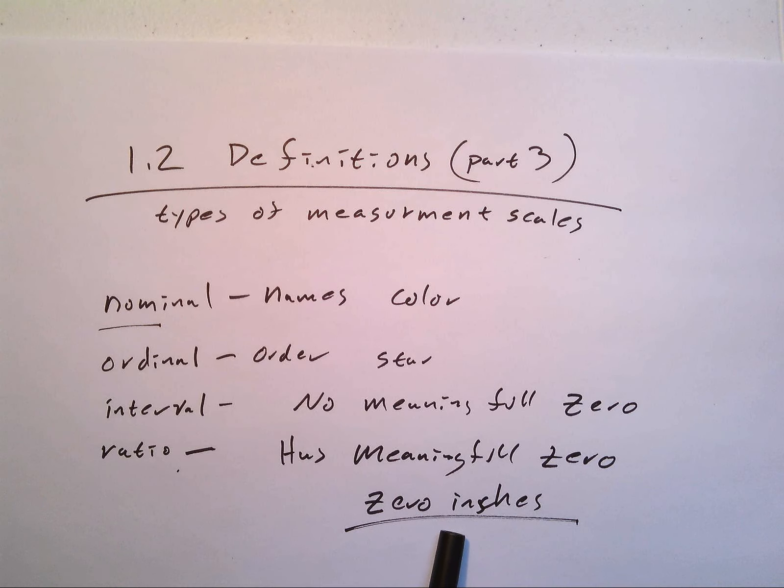Interval - now you have meaning between a two and a four and an eight. I'm doubling it each time and it literally means twice as many, but you don't have a zero because you can have negative values. The zero is just arbitrarily set somewhere for ease of use. Think zero degrees Celsius versus 32 degrees Fahrenheit.